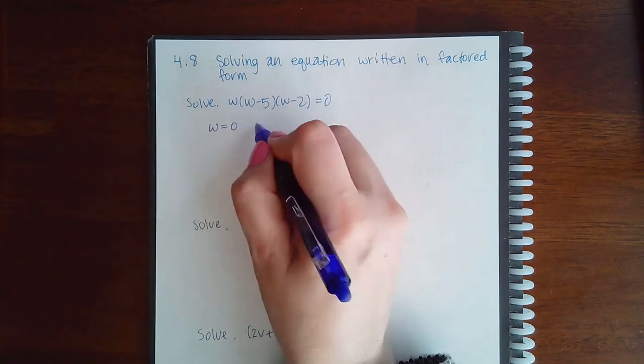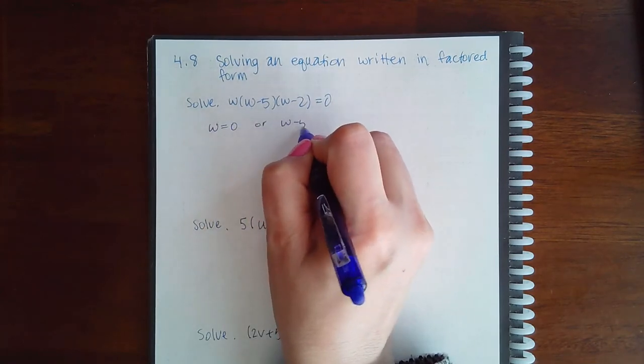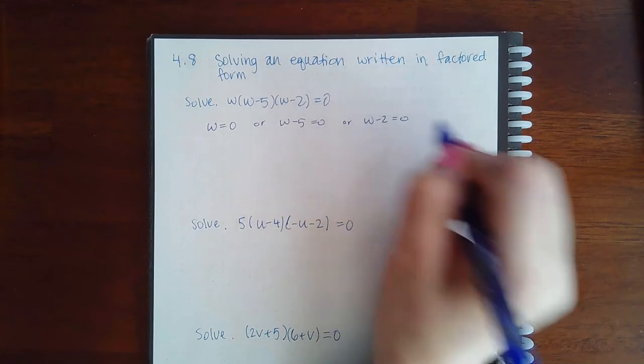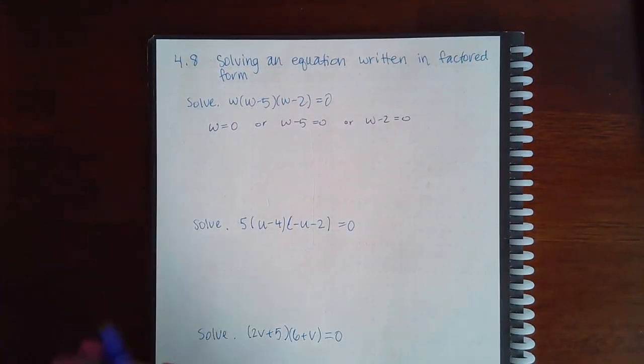this factor was equal to zero, or this factor was equal to zero, or this factor was equal to zero. And then you solve the resulting equations.